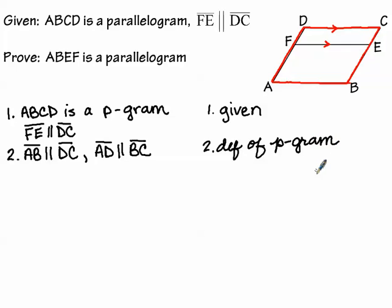Since we've already shown that segment AD is parallel to segment BC, it's naturally understood that segment AF, which is part of segment AD, is also parallel to segment BE, because it is part of segment BC. So in the quadrilateral ABEF — which we're trying to prove is a parallelogram — I already know that the left side and the right side are parallel.